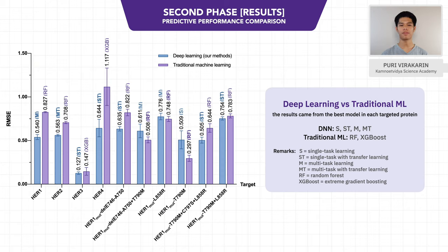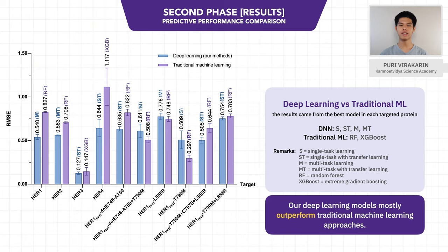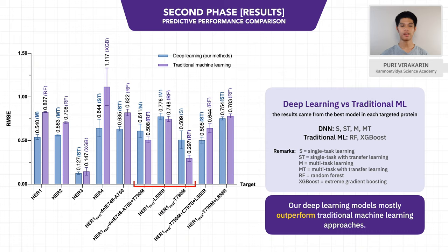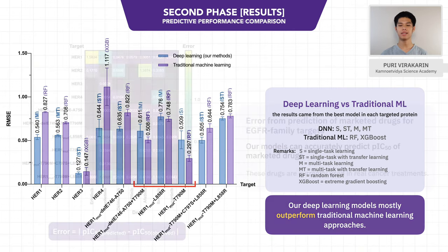These are our outcomes. This graph illustrates the predictive performance comparison between our deep learning models and traditional machine learning models. We use RMSE to compare the models. RMSE is the root mean square error of the prediction; therefore, the lower the RMSE, the better the predictive performance. As shown, it can be seen that most of our deep learning models outperform traditional models. However, there are some targets where the traditional models have higher efficiency. The reason is that in these targets, the similarity to LIC-EGFR is low, so the transfer learning and multi-target learning techniques cannot be applied effectively, as these techniques are based on the principle of similarity between targets.